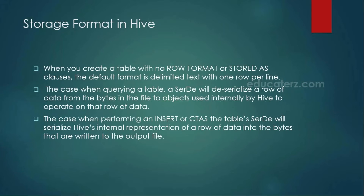For this purpose we use the row format delimited, and also whether you store it as a text file or not. By default it takes text file and it will take one row per line — that is the default format. Apart from that, you can specify stored as and instead of a text file, we do have different file formats as well.